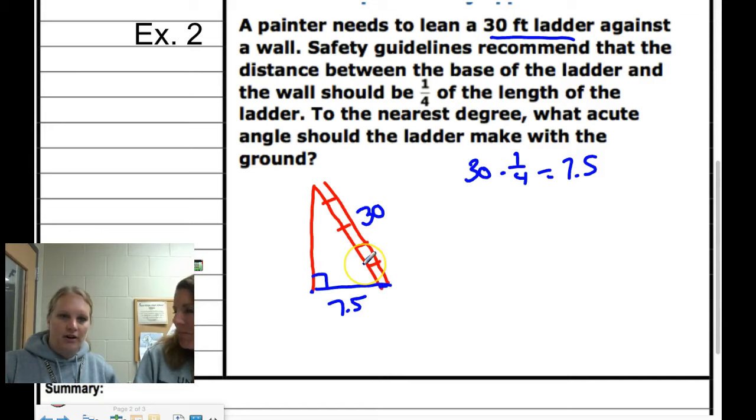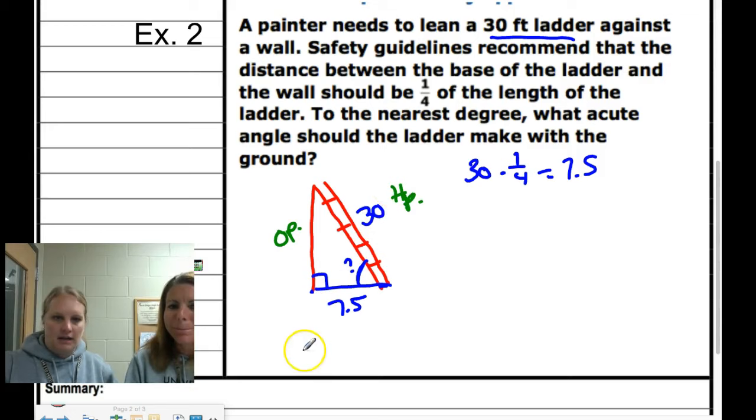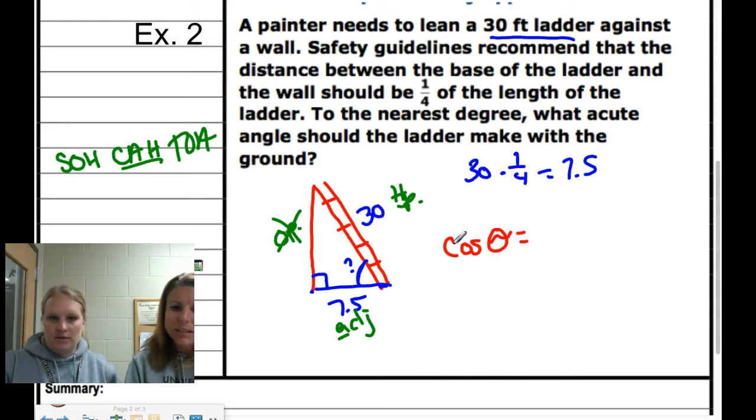Let's label our sides. Across from our angle is opposite, across from the 90 is hypotenuse, and adjacent. Which ones have the two numbers? Let's write SOH-CAH-TOA out again. We know H and A - that's CAH. So we have to use cosine. Cosine of theta equals adjacent, which is 7.5, over hypotenuse, 30.